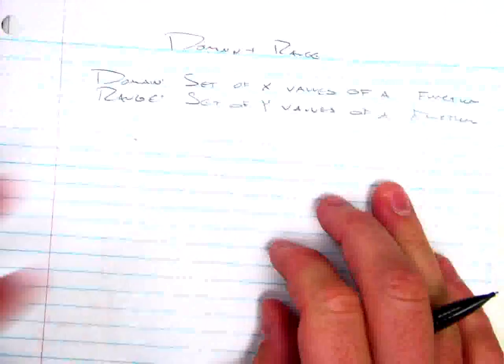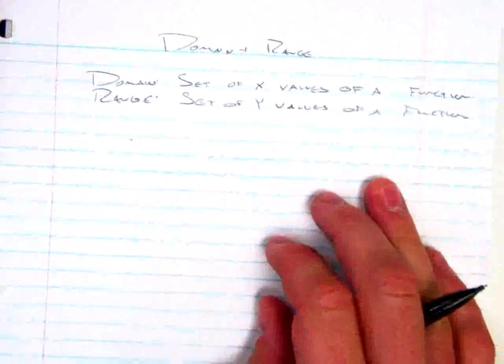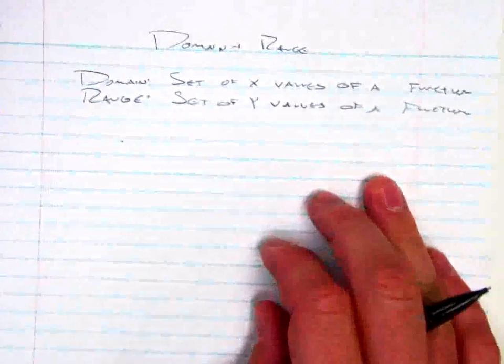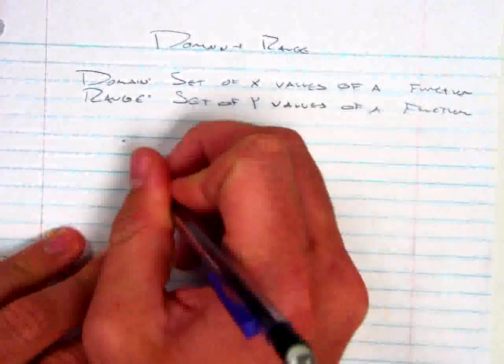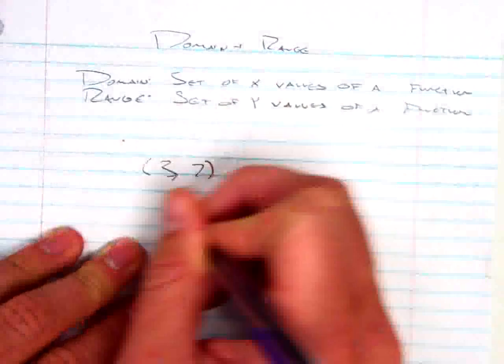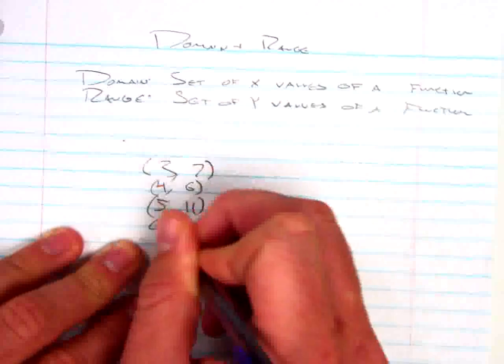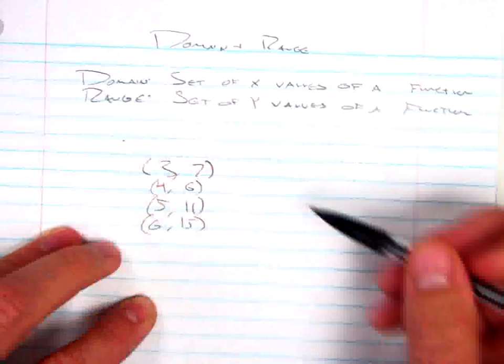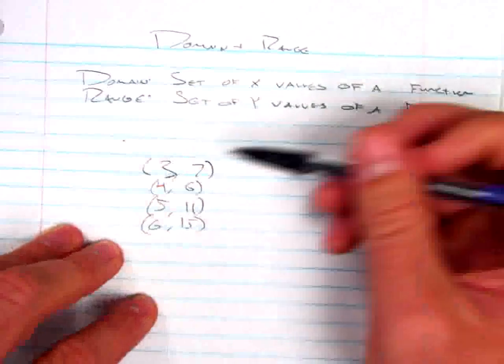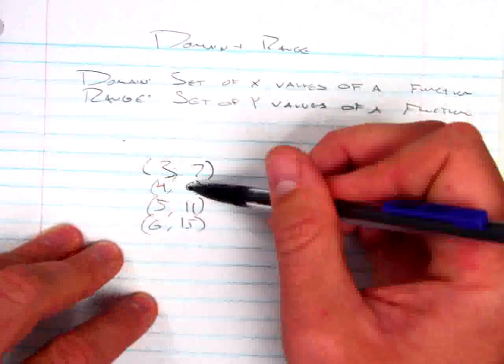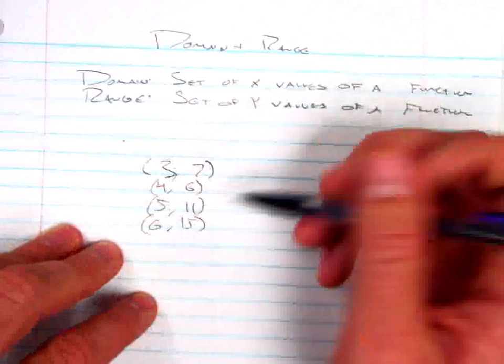So let's say, for example, you have a relation. And I take this relation, and I can just look. If this is the whole relation: 3, 7, these ordered pairs, 4, 6, 5, 11, and 6, 15.